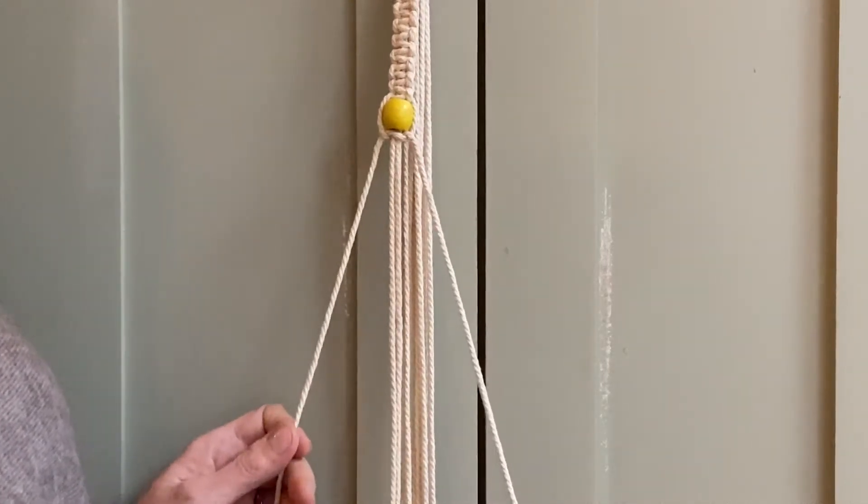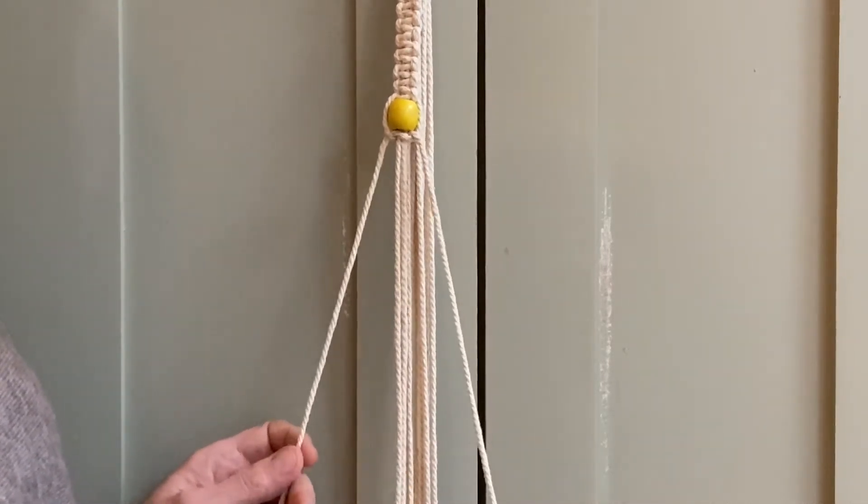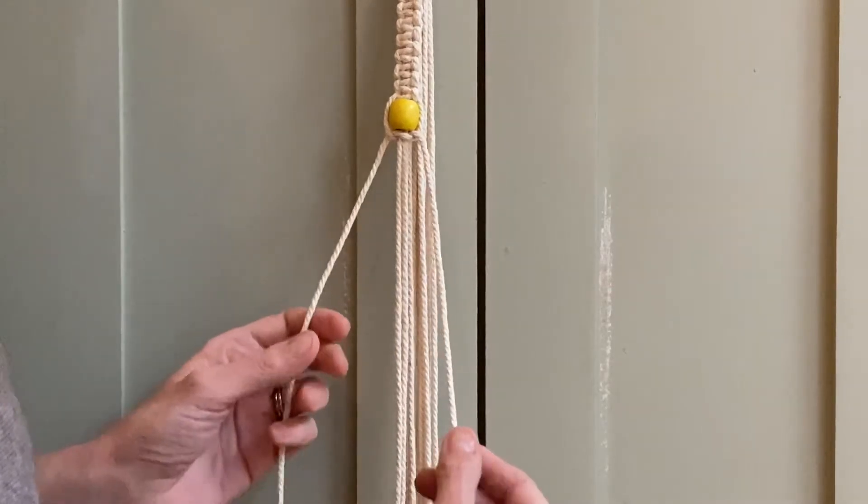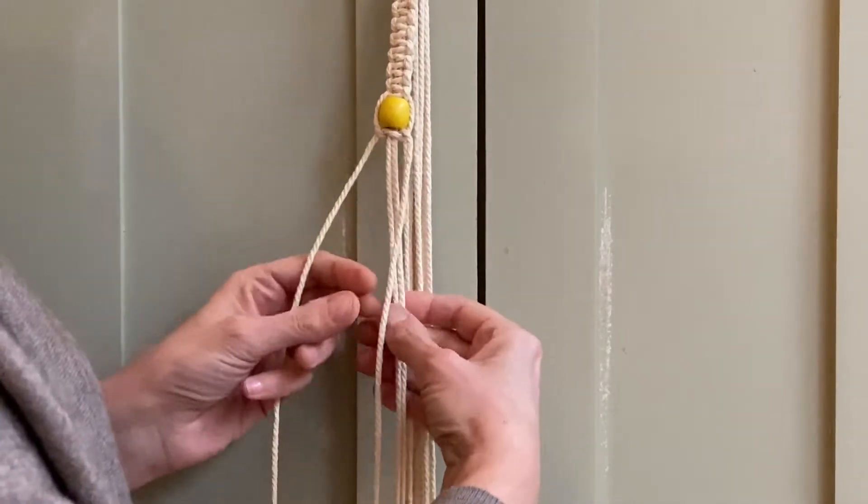So I'm now going to show you another effect that you can get using the reverse half square knot. It's going to be the spiral effect.